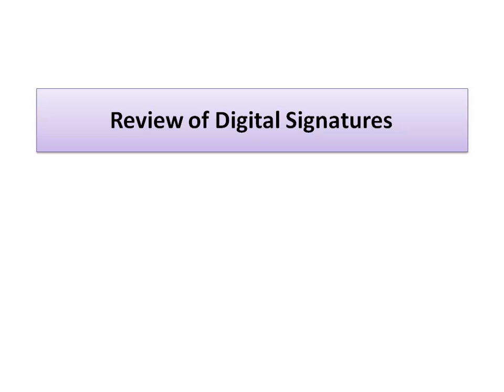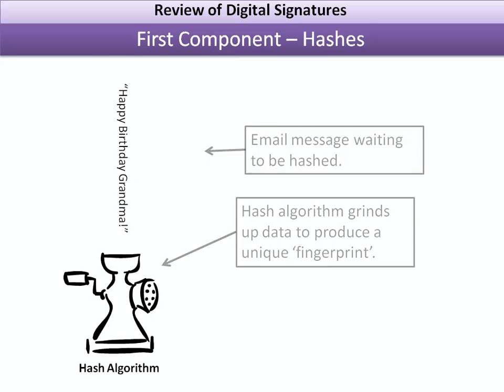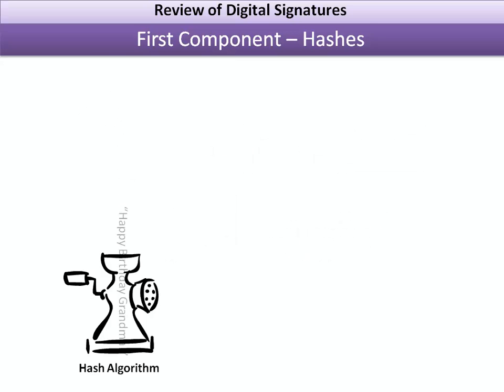I'm going to do a quick review of digital signatures, since understanding how these work is critical to understanding how my proposal works. The first component to understand is hashes. Hashes are algorithms that will grind up data to produce a unique fingerprint. So here we have an email message — 'happy birthday grandma' — and we send it through our hash algorithm, which looks kind of like a meat grinder, and it will spit out our hash.